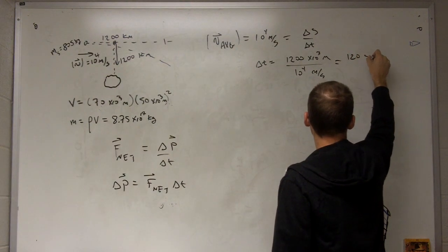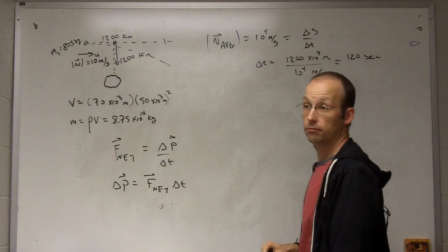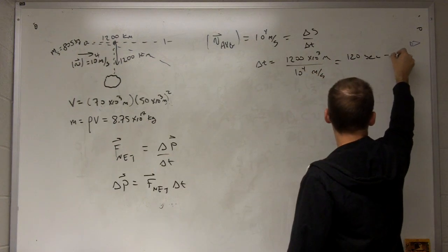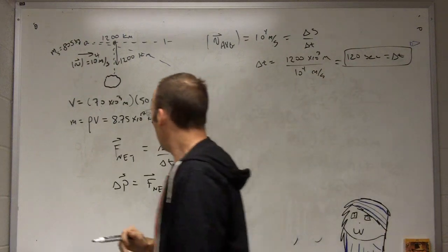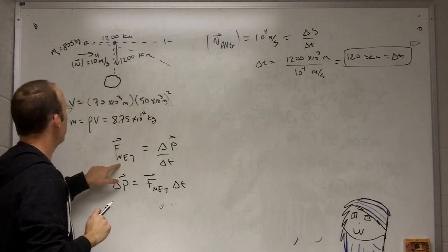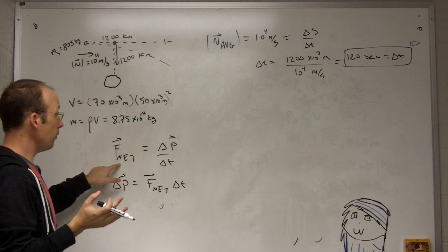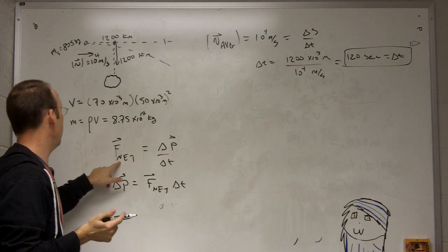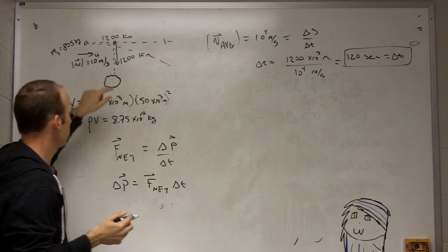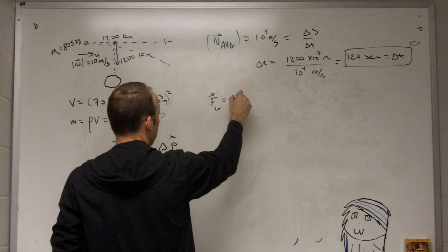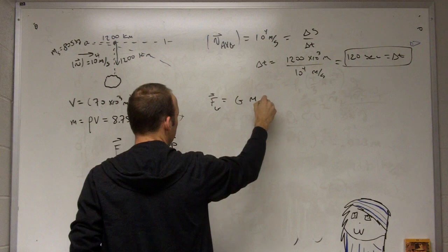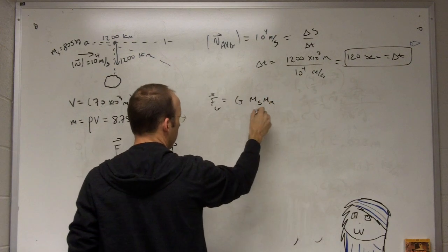So now I have my time. Okay, now for the gravitational force, let's just calculate this as the gravitational force right here. It's going to be F_G equals G mass of the spacecraft mass of the asteroid, I'll call Matilda, over R squared.